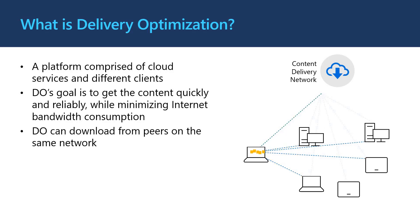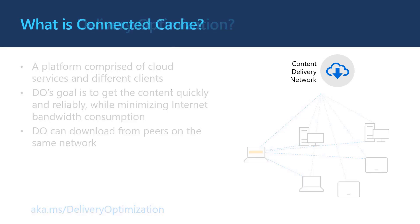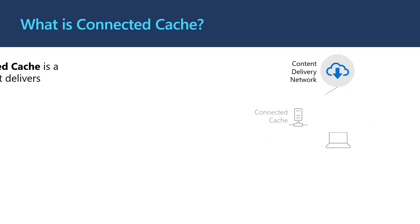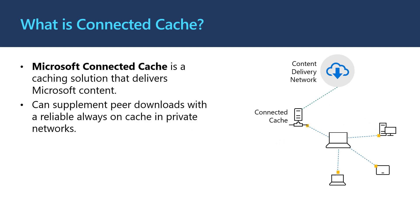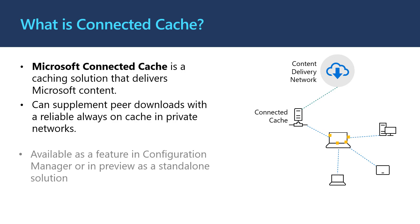A key feature of Delivery Optimization is the capability to download content from other Delivery Optimization clients that have recently downloaded the same content. Microsoft Connected Cache is a feature of Delivery Optimization that allows you to have a dedicated software cache available on your private network for clients to download content from alongside peers. Microsoft Connected Cache is available as a feature in Configuration Manager or in preview as a standalone solution. You can find links to both in the video description.